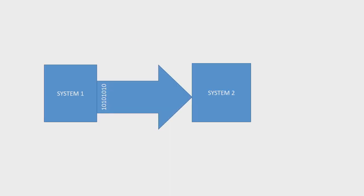Now, dear students, in this diagram you will observe two systems. System 1 is transmitting whereas system 2 is receiving. System 1 is transmitting the word 10101010 to system number 3. During one turn of transmission, it transmits all 8 bits simultaneously.